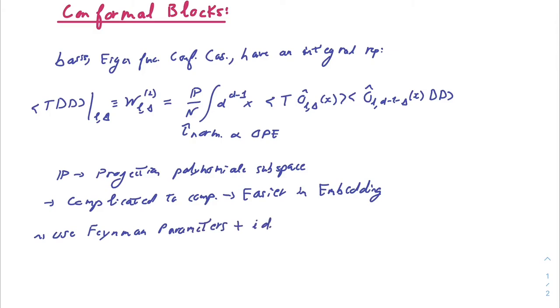In practice, these integrals are very complicated to compute, and to actually do them, we go to the embedding space, where it is efficient to do so using Feynman parameters and a single integral identity.